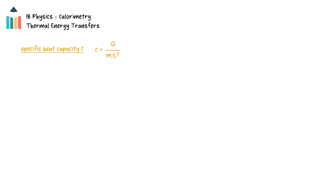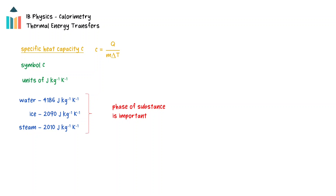The specific heat capacity of a substance is the energy required to change the temperature of one kilogram of the material by one degree Celsius or one unit of Kelvin. It has the symbol lowercase c and units of joules per kilogram Kelvin. Note that the phase of the substance will affect the specific heat capacity. The formula q equals mc delta T describes the amount of energy required for a given change in temperature of an object.